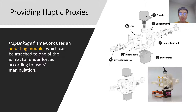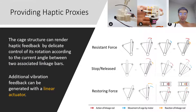The support frame equips an encoder and a servo motor to control the angle between two associated linkage bars. We provide a variety of haptic feedback, including a resistant force by moving the cage in response to user input; stop, by proactively positioning the cage; release, by suddenly disengaging the cage; restoration force, by leveraging a rubber band and moving the cage in response to user input. Additionally, reverberation feedback is generated with a linear actuator.